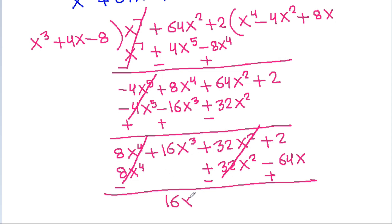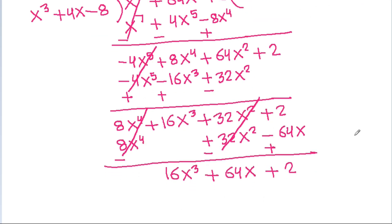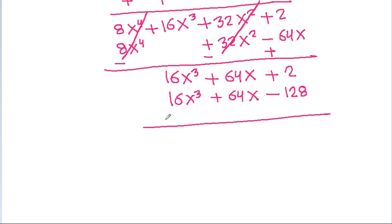So it is 16x cubed plus 64x plus 2. And x cubed times plus 16 is 16x cubed, and 4x times 16 is 64x, and minus 8 times 16 is minus 128. The sign will change, and 16x cubed will get cancelled, and 64x will get cancelled. So it is 2 plus 128, that is 130.